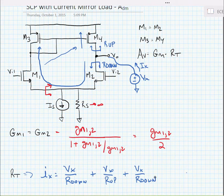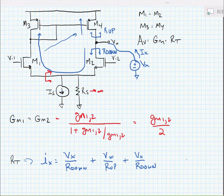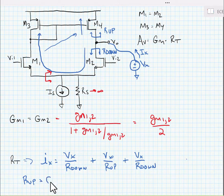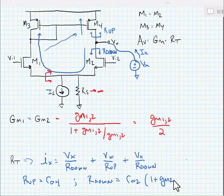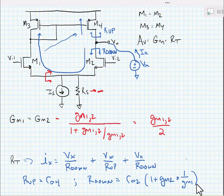Okay, so what is R looking up? R looking up is just the output resistance of M4, in other words RO4. What is R down? It is equal to RO2 times 1 plus GM2 times 1 over GM1. In other words, the source degeneration for M2 is equal to 1 over GM1. Now we know that because GM1 and GM2 are equal to one another they cancel, and ultimately we find that R looking down is equal to 2 times RO2.